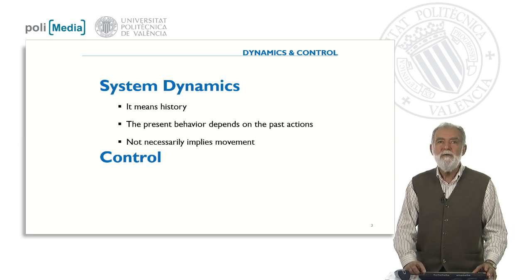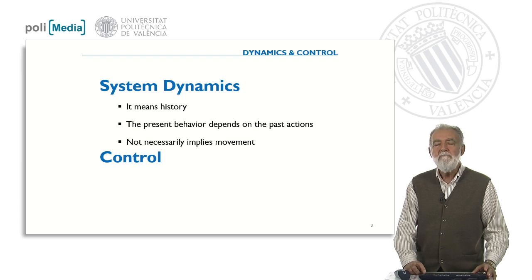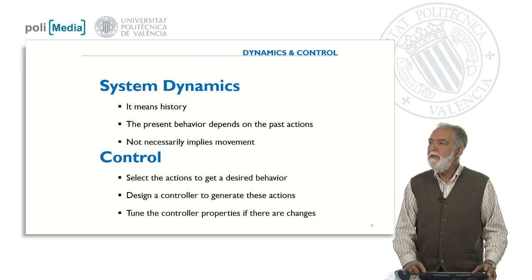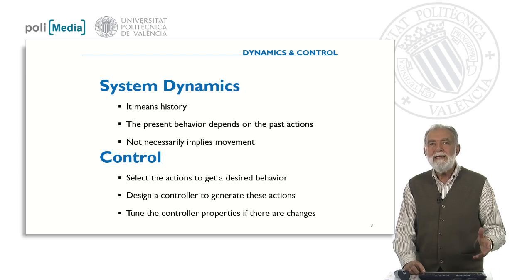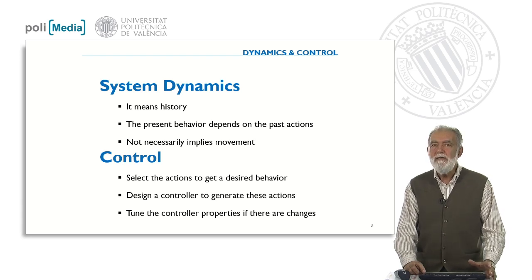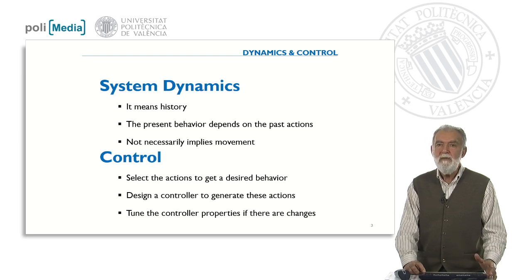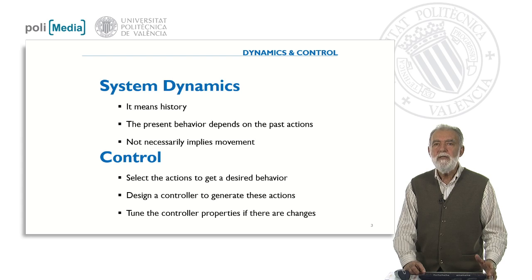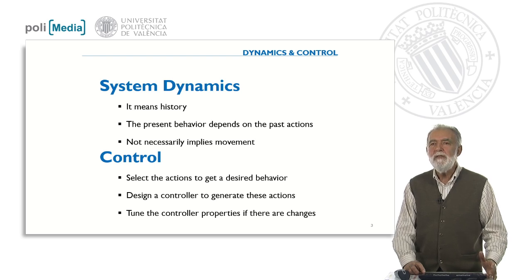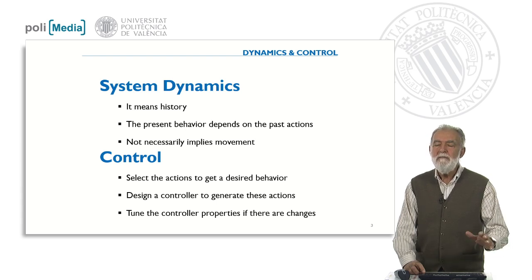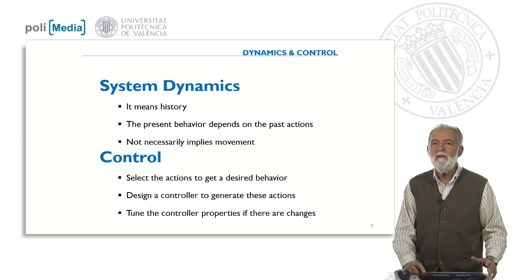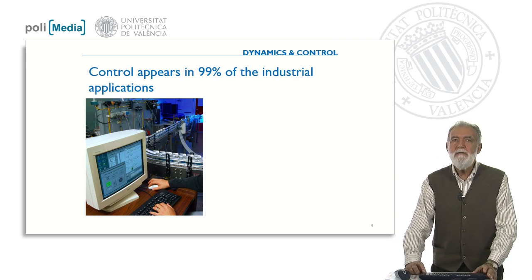What is the meaning of control? Dynamic systems can be modified by changing some variables. The role of control is to select which actions are needed to get a desired behavior. This involves adding a subsystem called the controller, which generates the control actions. The goal of control is to tune the controller parameters when there are changes in the process. During this course, we will use the concepts of system and process almost equivalently.